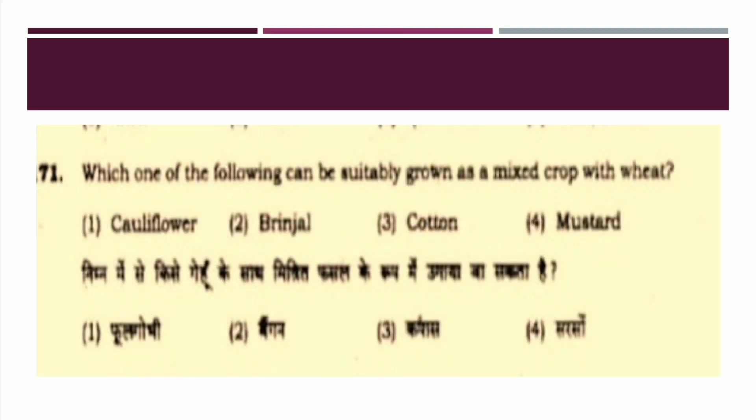The next question: Which one of the following can be suitably grown as a mixed crop with wheat? The options are: Cauliflower, Brinjal, Cotton, or Mustard. The right answer is Option number four: Mustard.